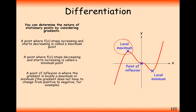Looking at the local maximum at this point here: this is going from a positive gradient to a zero gradient to a negative gradient. So let's look at how the gradient is changing here — what we need to consider is the second derivative. The original derivative is the rate at which the y-coordinates change, but the second derivative is the rate at which the gradient changes. This gradient here seems to be getting smaller each time, so the second derivative is going to be negative.